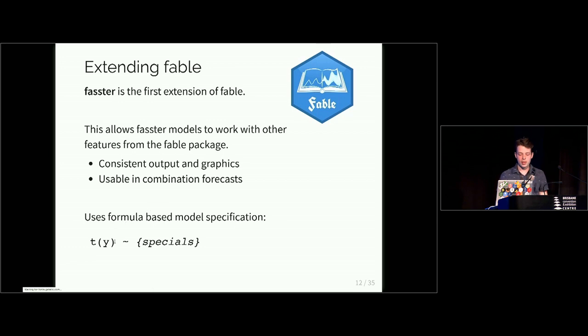As Rob mentioned, Fable uses a transformation, flexible transformation system. If you wanted to do a log transformation, you don't need to write box cox lambda equals zero anymore. You can actually say what it is. It's a log transformation. And you can also join transformations in here. So maybe you wanted a log plus one. It'll invert that for you naturally.